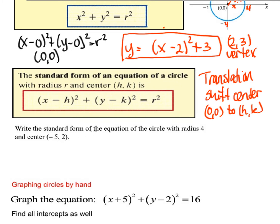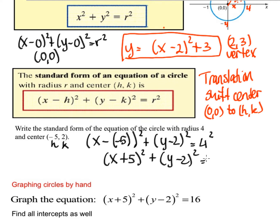So write the standard form of the equation of the circle with radius 4 and center at (-5,2). So that is h and that is k. So then we're going to do x minus h. So minus h would be -5 squared plus y minus k, and k is 2, equals 4². Then we would clean that up a little bit. So we write (x+5)² + (y-2)² = 16.